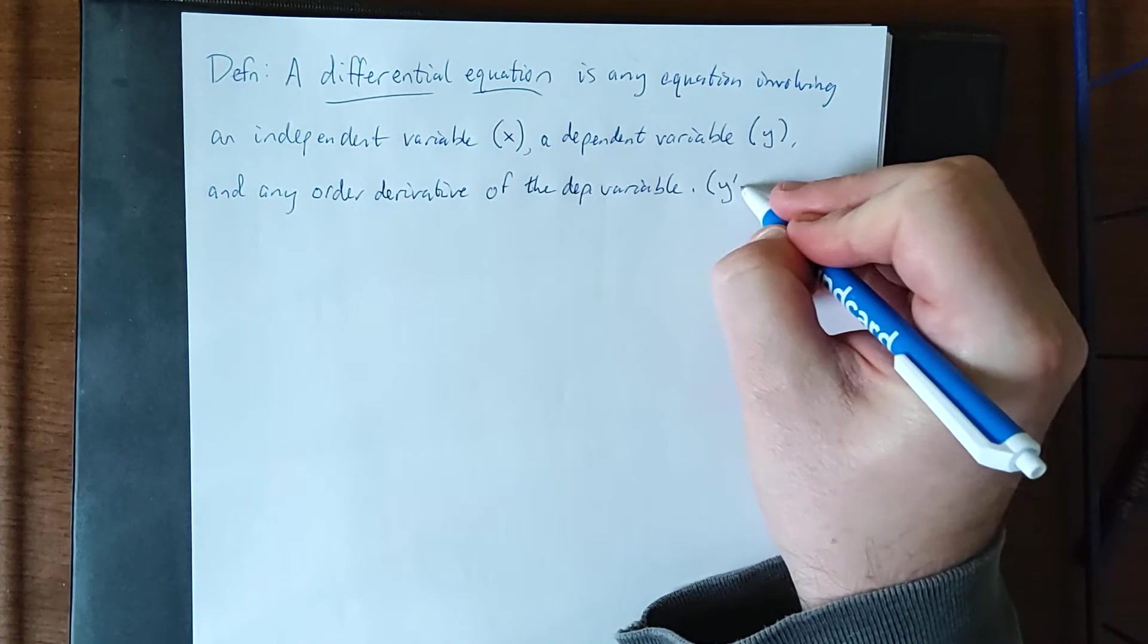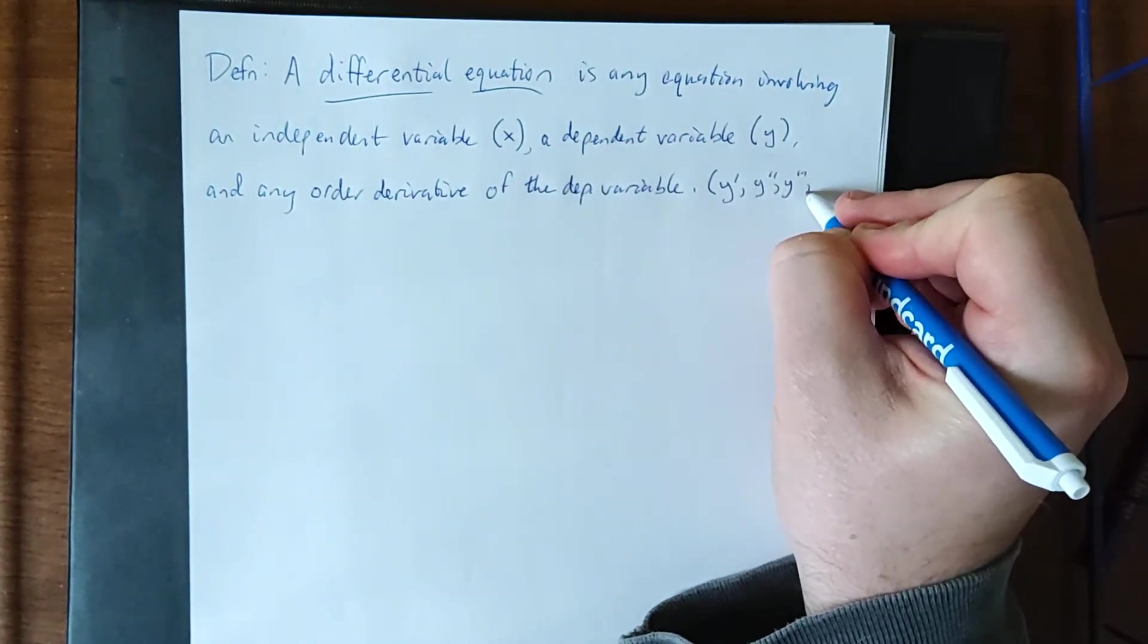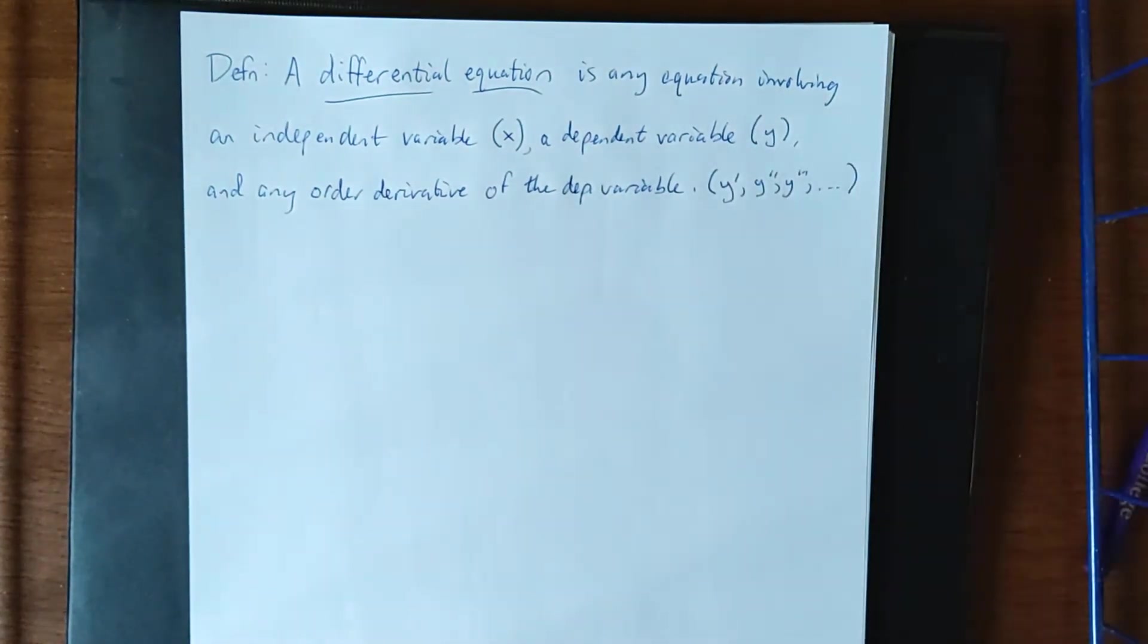And any order derivative of the dependent variable. So we could be talking about things like y prime, y double prime, y triple prime, and so forth and so on.